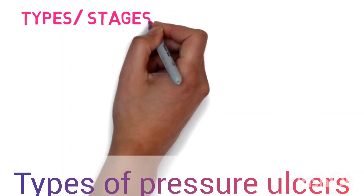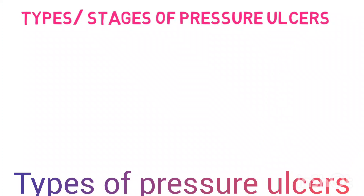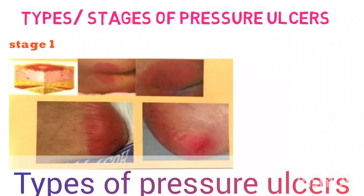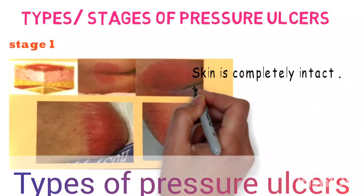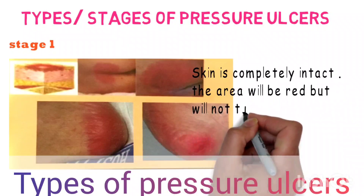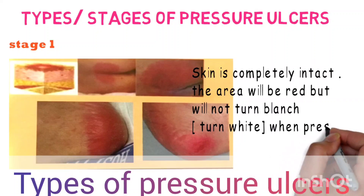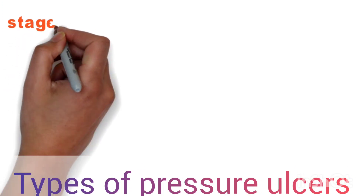Now we are going to discuss the types or stages of pressure ulcers. Stage one: the skin is completely intact. The affected area will be red but will not blanch — meaning it will not turn white when pressed. That is the first category of pressure ulcer.